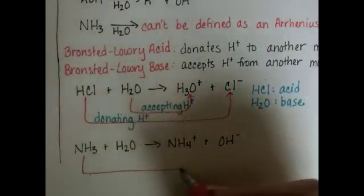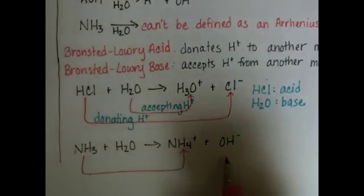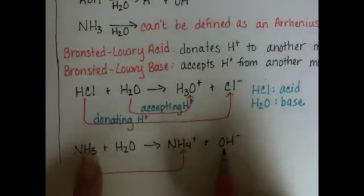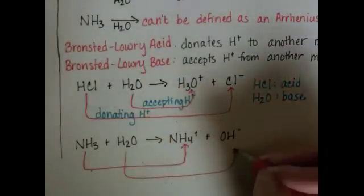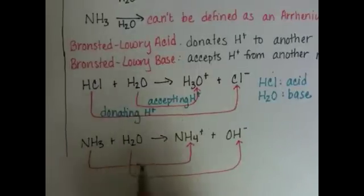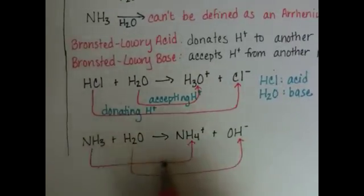NH3 turns into NH4. It doesn't make sense to say NH3 is turning into OH. They don't have enough atoms in common. The water is turning into hydroxide. Now that we've identified the two paths, we want to look at each path independently.